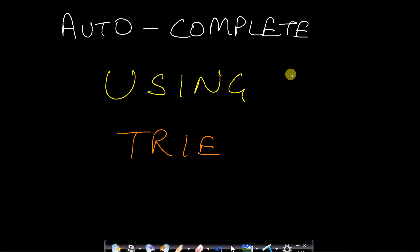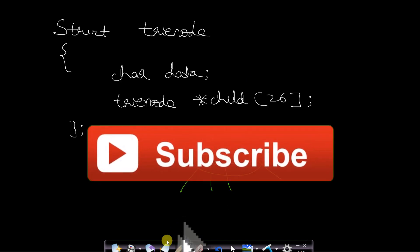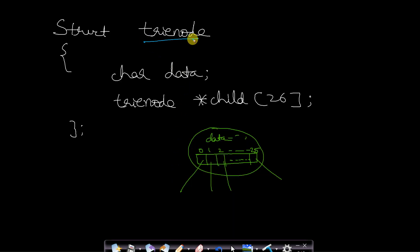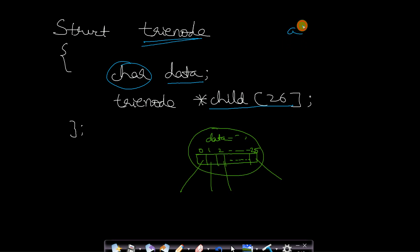Hello guys, welcome back to TechDose. In this video we will see the autocomplete feature using Trie. The Trie node will contain a variable data of type character, and then we will have 26 pointers — assuming all characters will be either in lowercase or uppercase but not in mixed cases. So this is the node structure: a character data field and an array of 26 pointers.